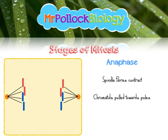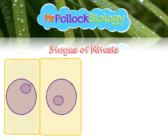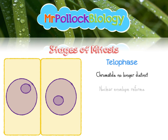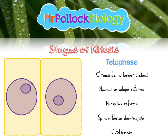Finally, we've got telophase. We can no longer see the chromatids. The nuclear envelope reforms, the nucleolus reforms, and the spindle fibres disintegrate. We then get the cell division itself occurring — this is called cytokinesis.